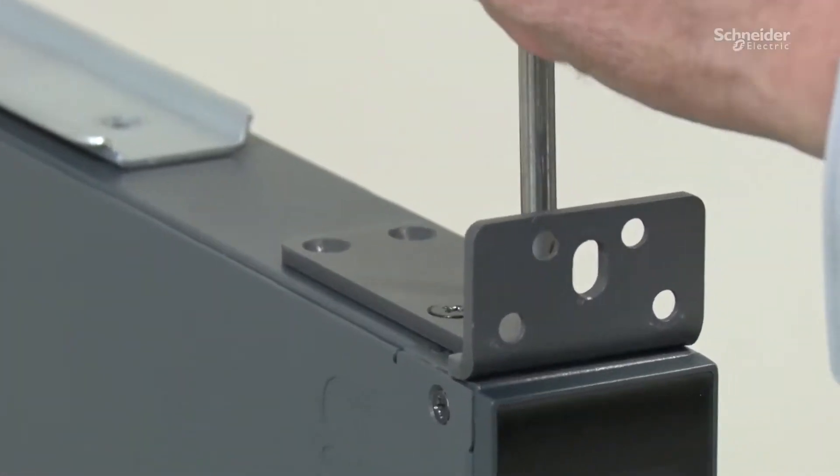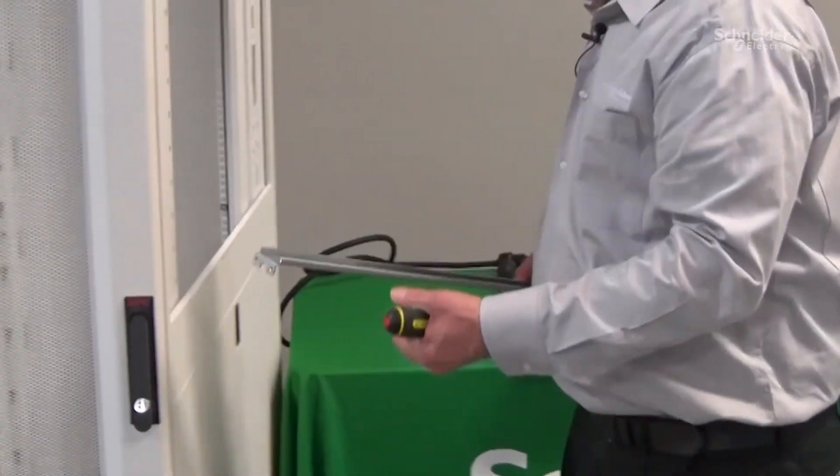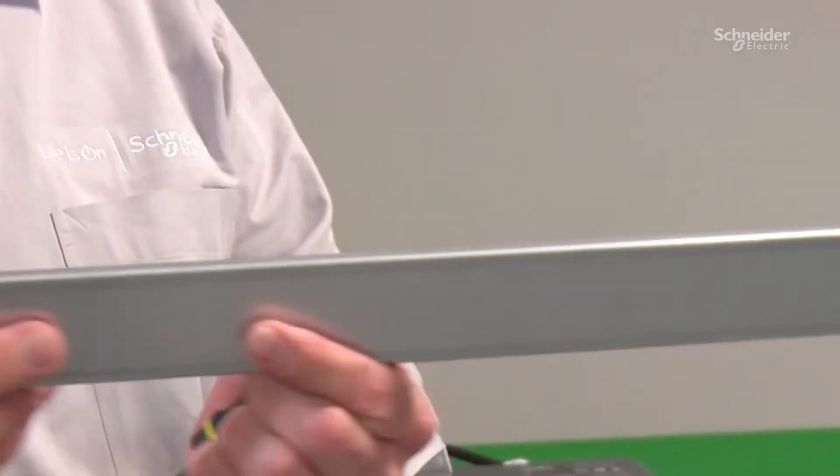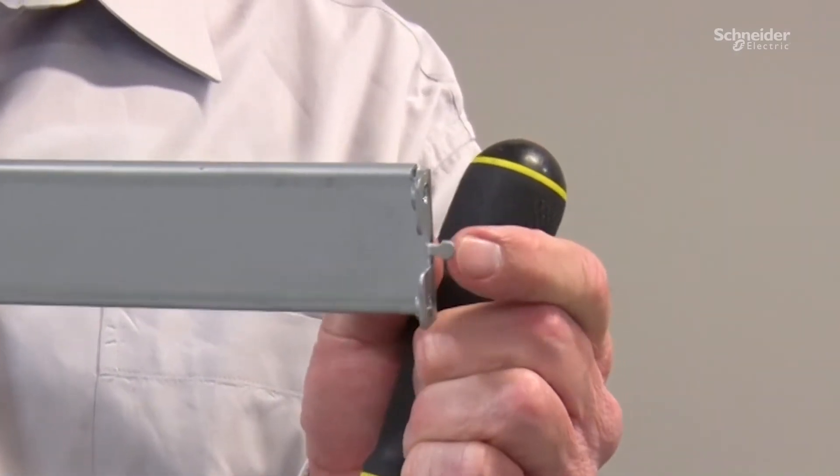Now we're ready to install it in the cabinet. The rail for the cabinet has a front and back, the front here, and then in back you can see this little tab that's used to help with the alignment.